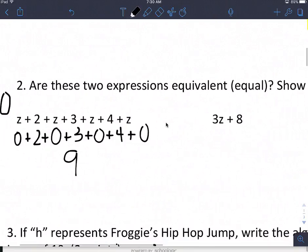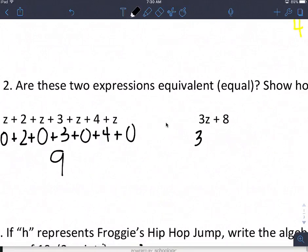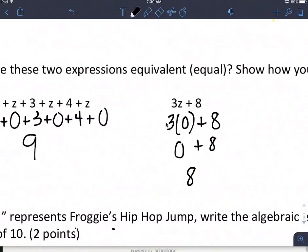This one, this is 3 times z, or 3 times 0 plus 8. 3 times 0 is 0 plus 8 is 8. Are they equivalent? No, 9 does not equal 8.